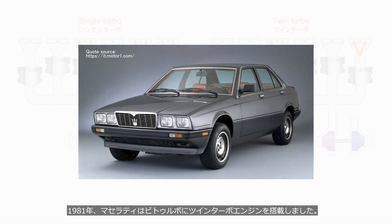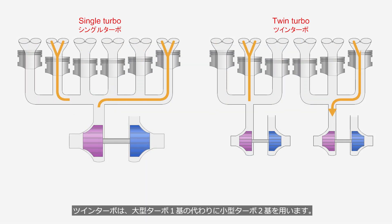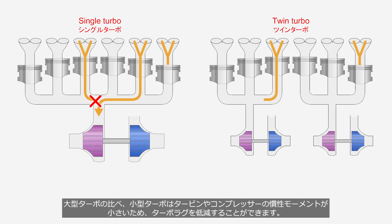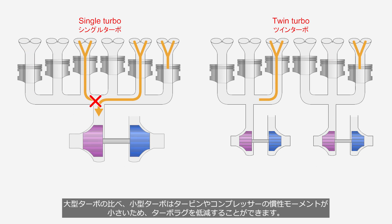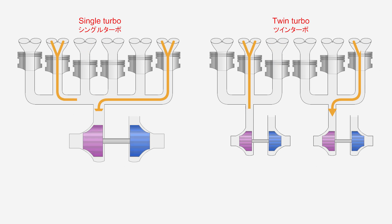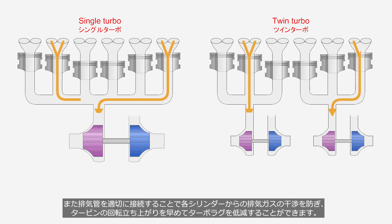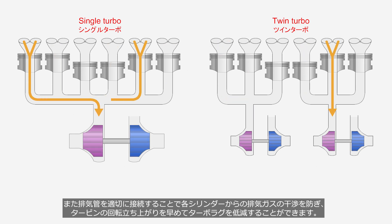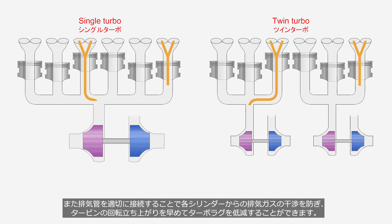In 1981, Maserati adopted the world's first twin-turbo engine for a production car, installing it in their Biturbo. Twin-turbo utilizes two small turbos instead of a large one. Compared to a large turbo, a small turbo has lower inertia moments of the turbine wheel and compressor wheel, which allows for a reduction in turbo lag. Additionally, by appropriately connecting the exhaust pipes, it is possible to prevent interference from exhaust gases from each cylinder, thereby accelerating the spool-up of the turbine wheel and reducing turbo lag.